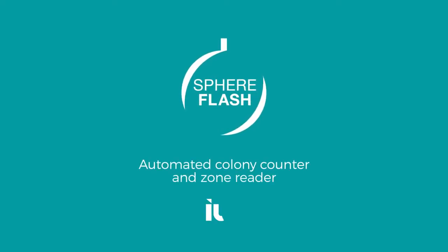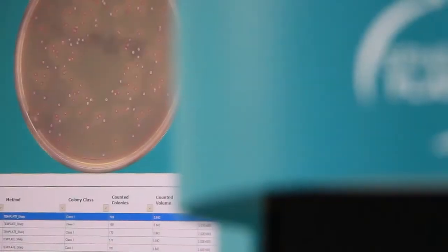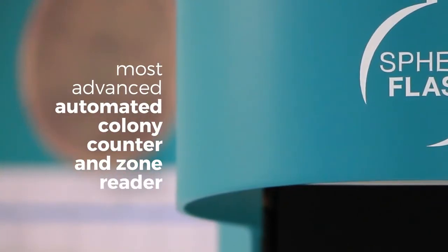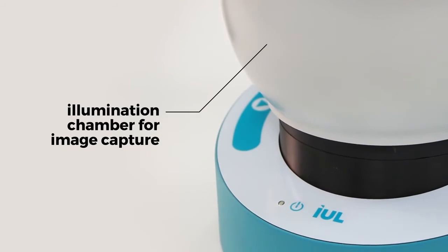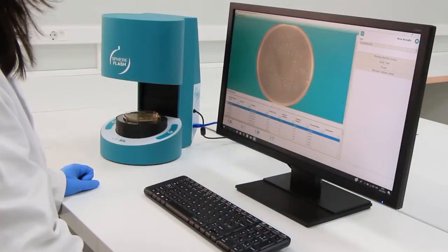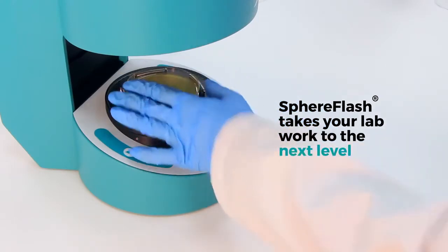SphereFlash Automated Colony Counter and Zone Reader. The SphereFlash is IUL's most advanced automated colony counter and zone reader, featuring the best illumination chamber for image capture available on the market and powerful but intuitive software. SphereFlash takes your lab work to the next level.